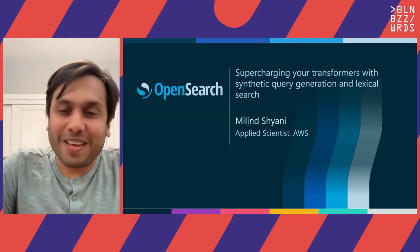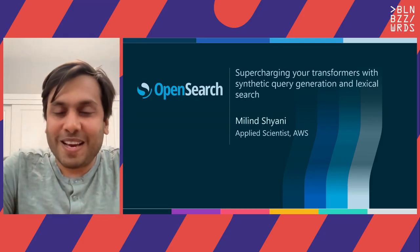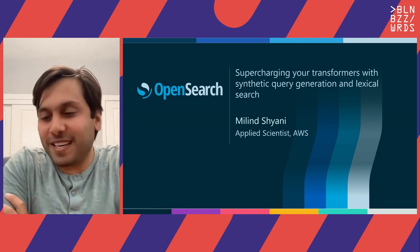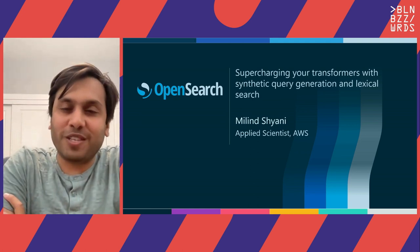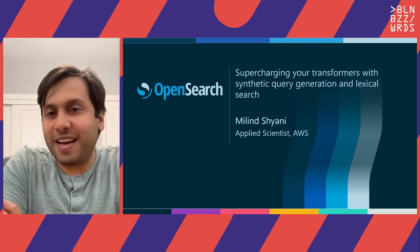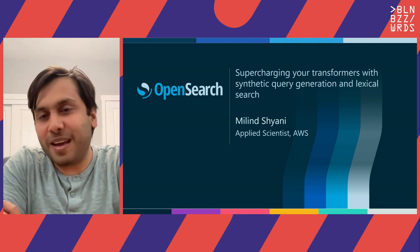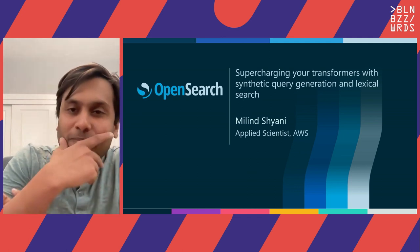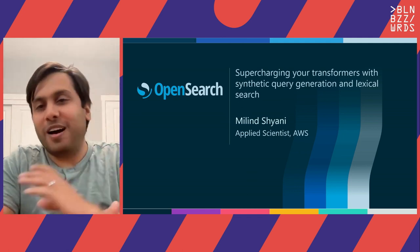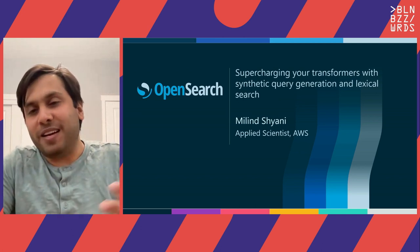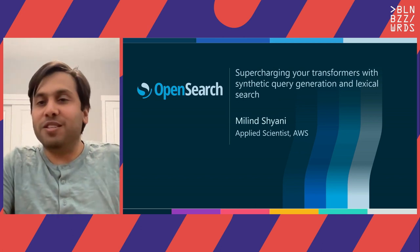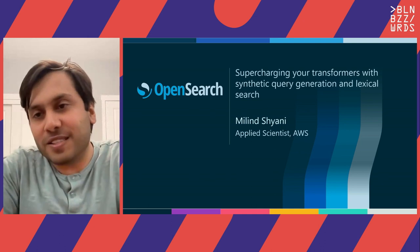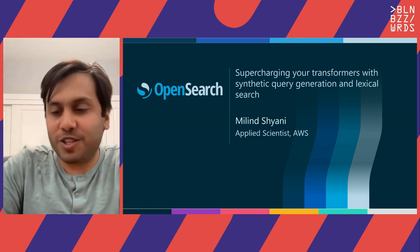Thanks for being here. I'm sorry I couldn't be there in person. My name is Malin Shaini and I'm an Applied Scientist at Amazon, and I've been working on machine learning for the last one and a half years at Amazon. Today I'll be talking about transformers and in particular how you could make them better with the techniques of synthetic query generation and lexical search to get state-of-the-art results for search.